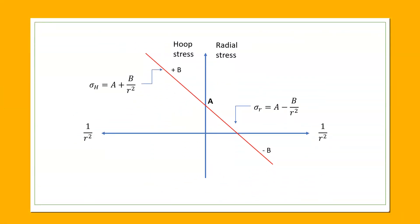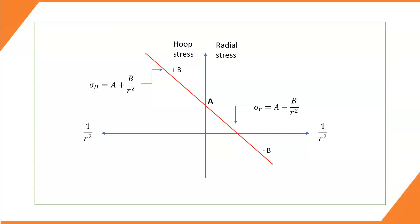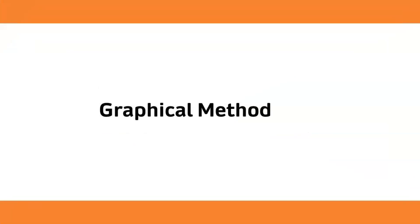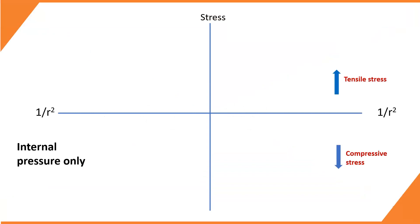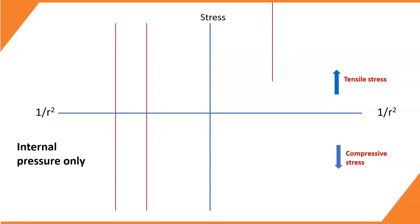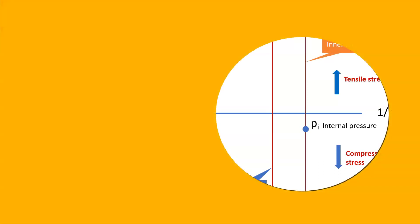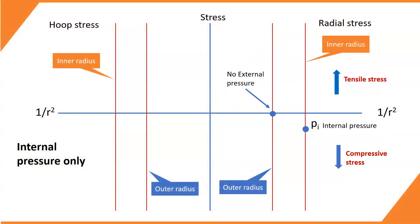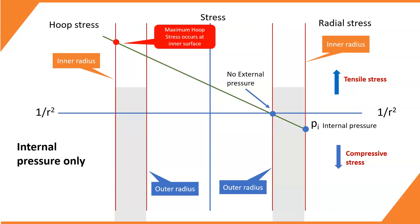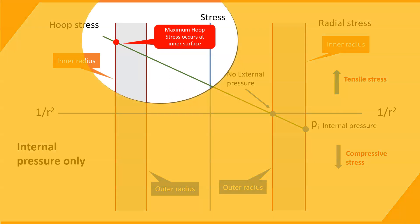Here is the single plot for both stresses with corresponding Lame's equations. Let us look at how to show the stresses when a thick cylinder is subjected to an internal pressure only. We draw the stress axis and the 1/R² axis, then draw vertical lines to represent the inner and outer radii. The pressure acting on the internal surface is taken as a compressive stress, and the pressure on the outer surface is taken as zero. Drawing a straight line joining these two points and extending it to the hoop stress side, we can determine the radial and hoop stresses within the region between the inner and outer radii. The maximum stress occurs at the inner surface of the cylinder, which is a tensile hoop stress.